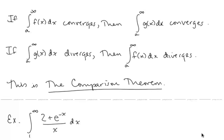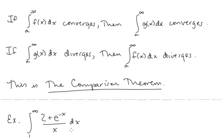Let's take a look at an example. We have the integral from 1 to infinity of (2 + e^(-x))/x. We know from Lesson 15 that the integral of 2/x from 1 to infinity diverges, because that's 1/x^p where p equals 1. So if we can show that our function is greater than or equal to 2/x, then we would know this integral diverges as well.